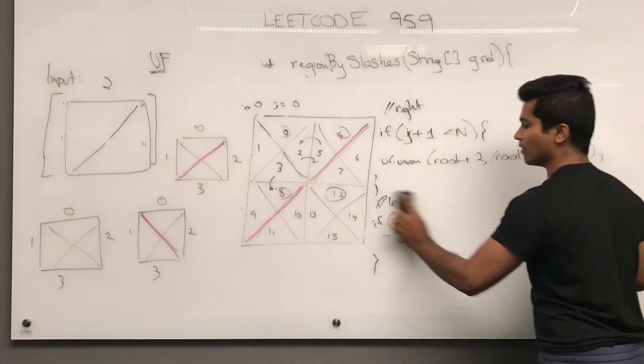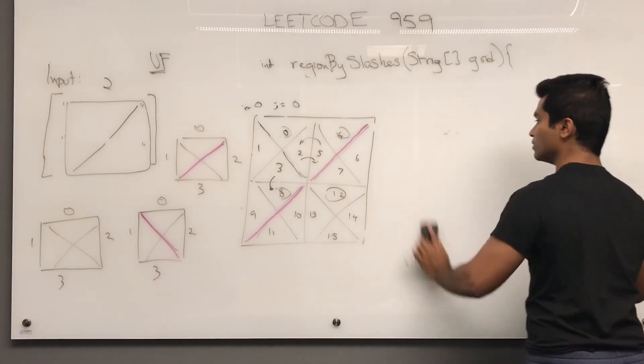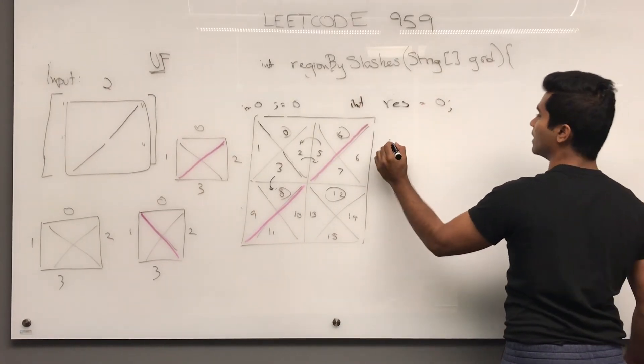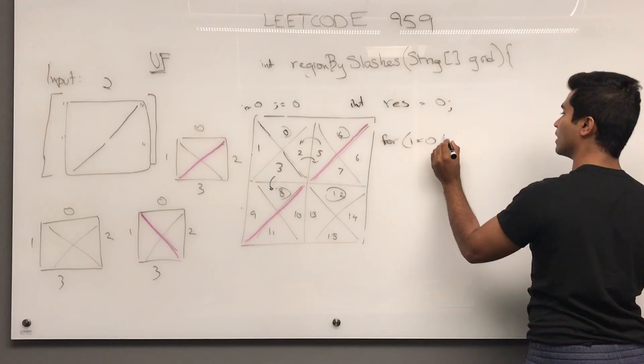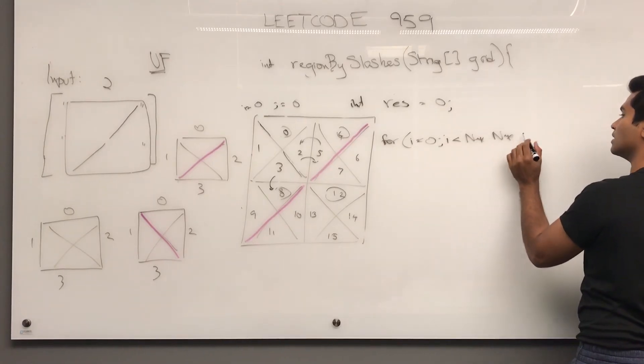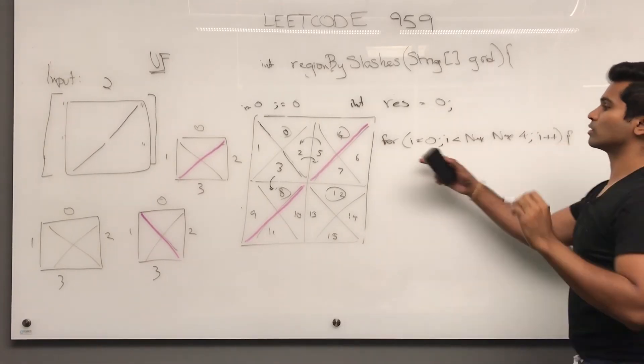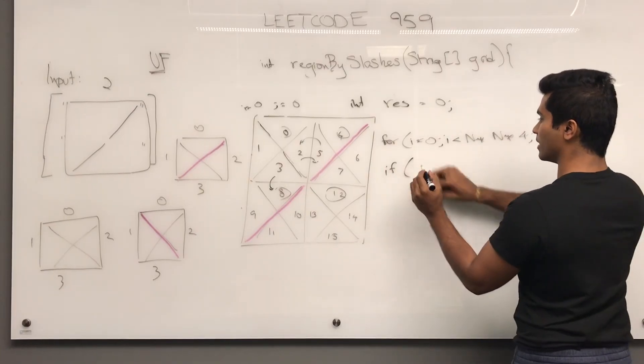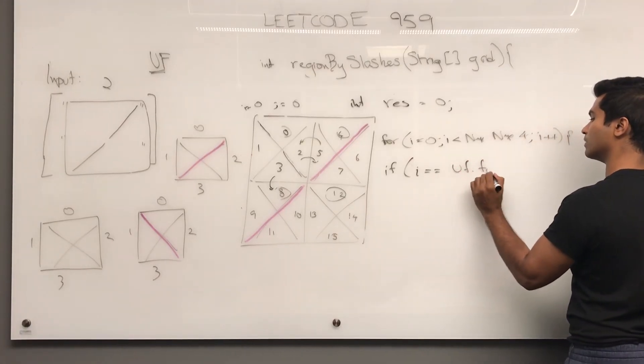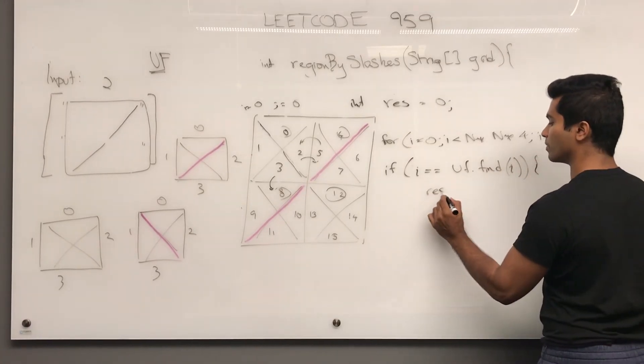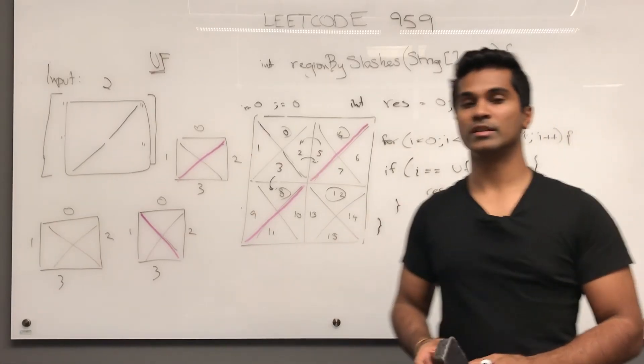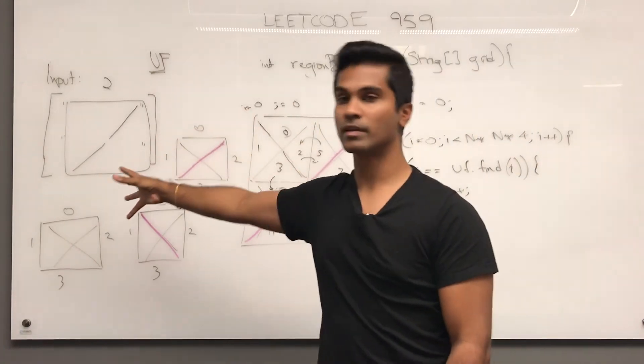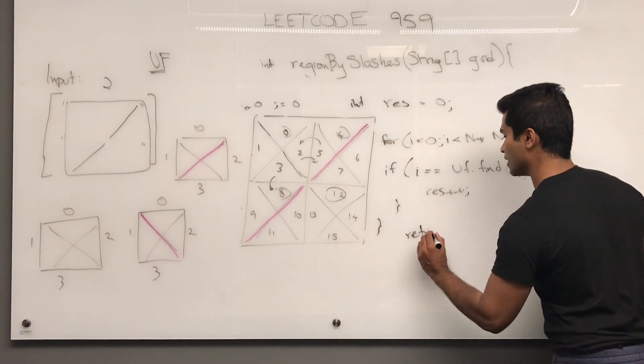Now that we've filled all of our subsets, all we have to do is keep track of how many different things there are. So let's write int res because they want integer as a result. Now, we iterate through int i equals 0, i is less than n times n times 4, i plus plus. We do this because we're going to iterate over the internal array of the union find data structure. If i is equal to uf dot find i, then we increment res. Pretty much what this is going to do is it's going to check how many indices are equal to its parent in the internal data structure of the uf. And every time we find one, we increment res and return res.